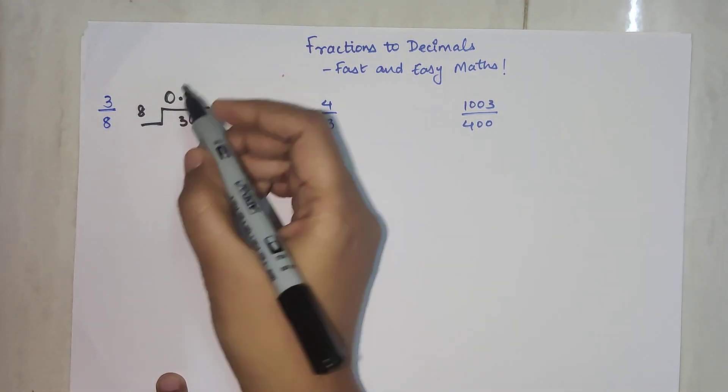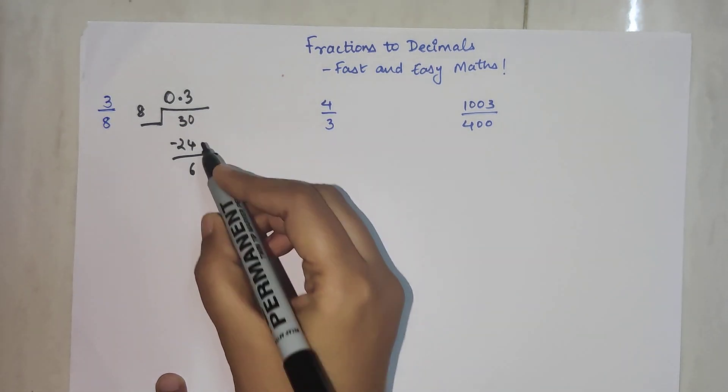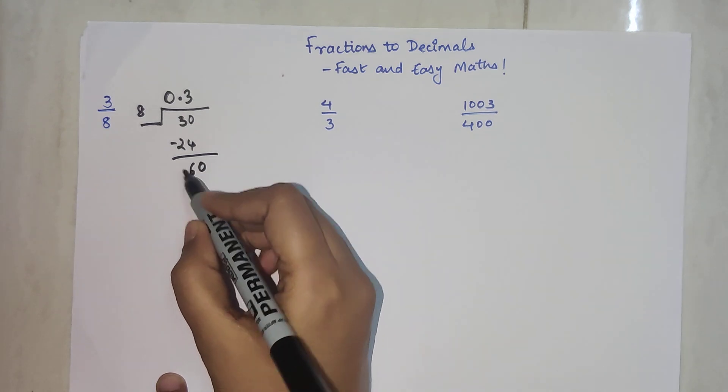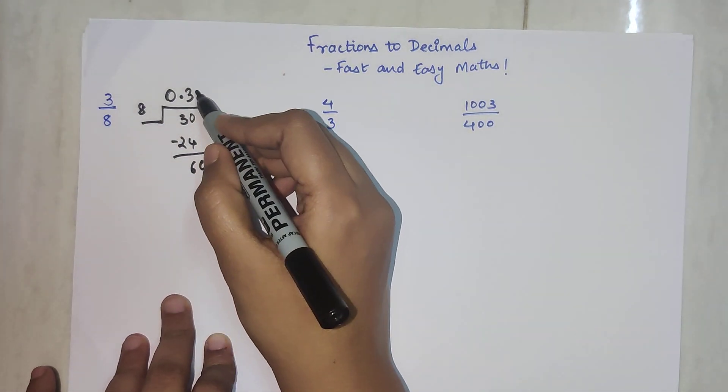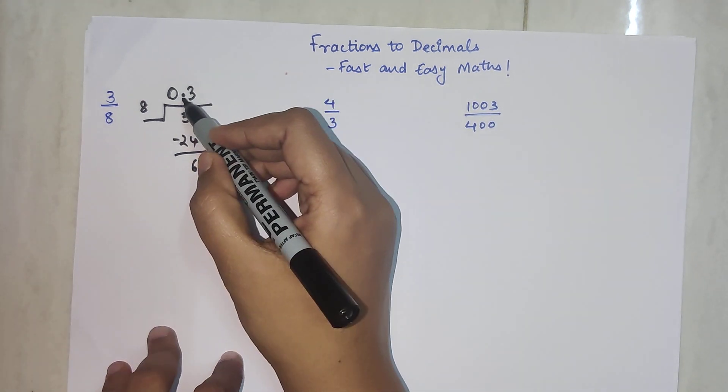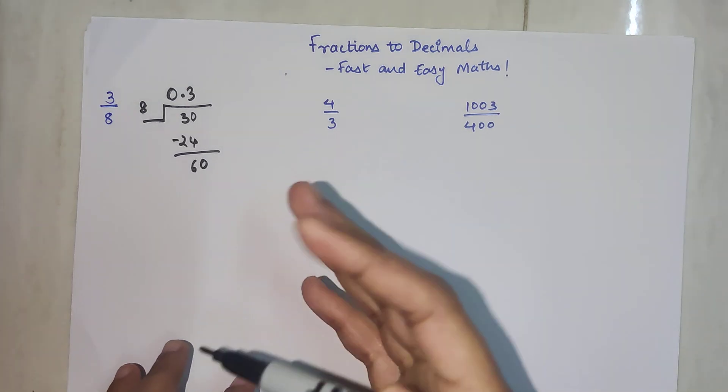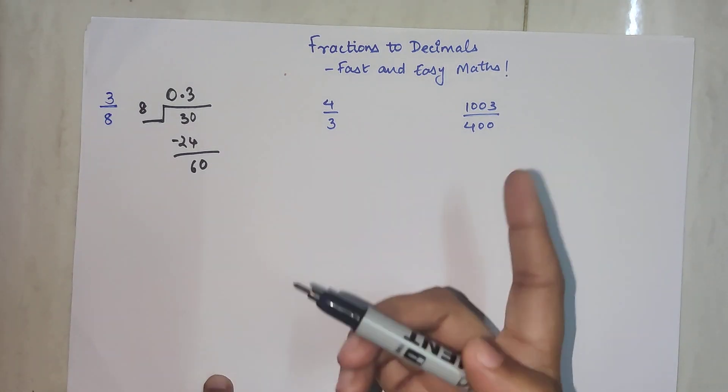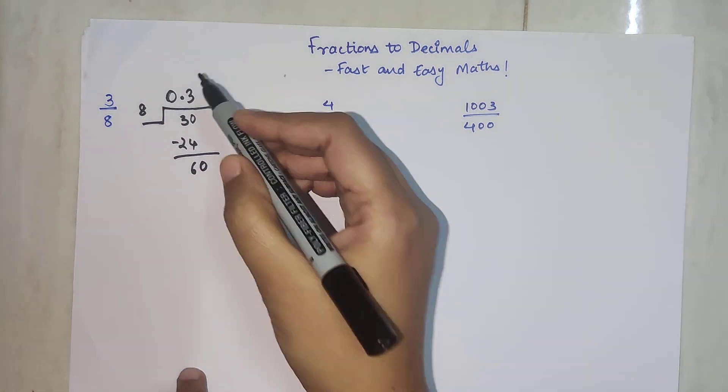So for 3/8, we know 8 times 3 gets you 24, you're left with 6. Now you can again put a 0 because 6 is less than 8. But when you're putting a 0, you don't have to put a 0 or decimal point. Decimal point already taken. When you've taken one decimal point, you always have the liberty to use one 0. Only one 0, please understand.